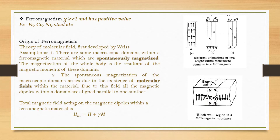What is ferromagnetism? As we have already studied in the experiment Quinck's tube method, when the value of chi — that is the magnetic susceptibility — is many times greater than 1 and positive, the material shows ferromagnetism.